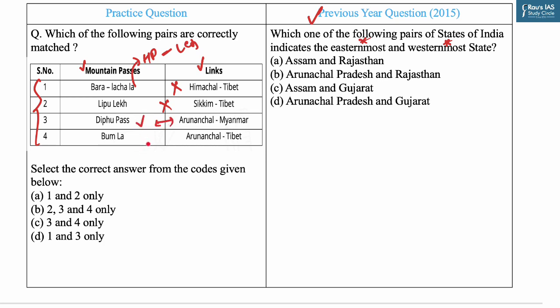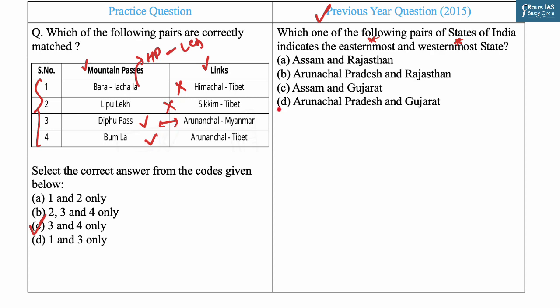Bumla Pass is a border pass between Tibet and India's Tawang district in Arunachal Pradesh. It currently serves as a trading point between Arunachal Pradesh and Tibet and is also an agreed border personnel meeting point for the security forces of China and India. So the correct pairs are three and four only — answer C. The answer for this PYQ is D, that is Arunachal Pradesh and Gujarat.